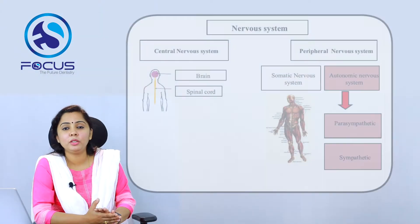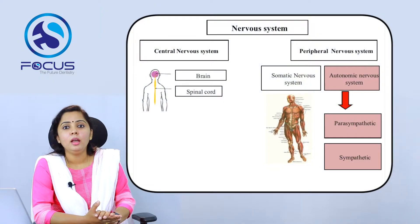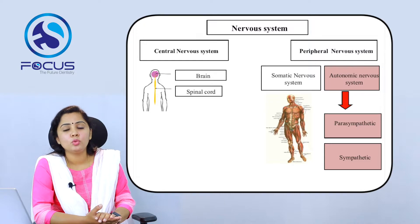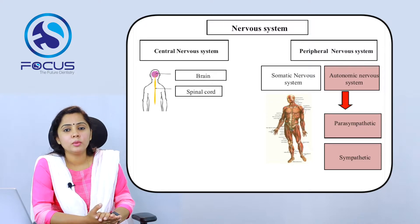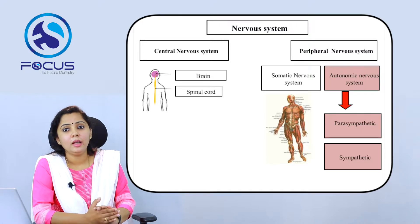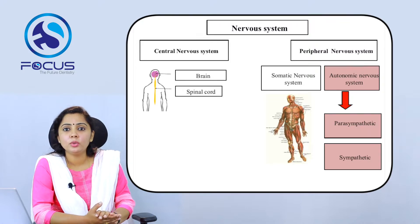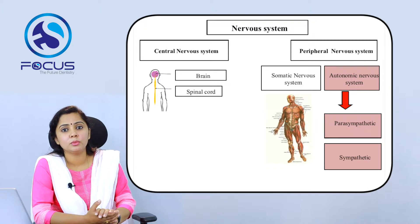What is the autonomic nervous system? To understand that, we will see a big picture of the nervous system. The nervous system is divided into two: the central nervous system and the peripheral nervous system. The central nervous system includes the brain and the spinal cord, and the peripheral nervous system includes the somatic nervous system and the autonomic nervous system.